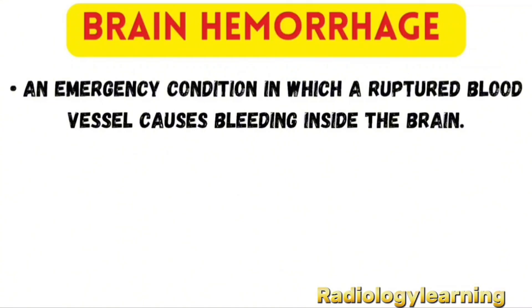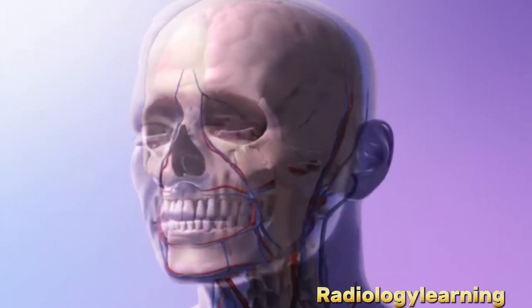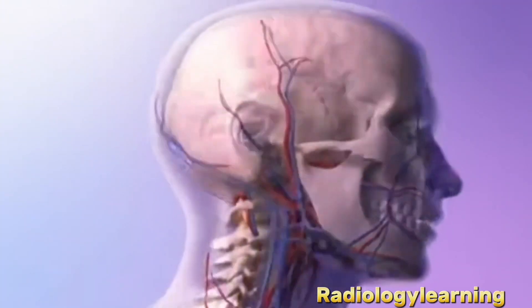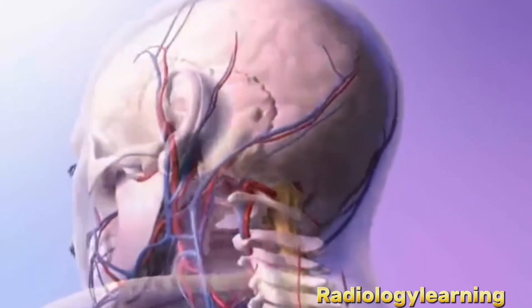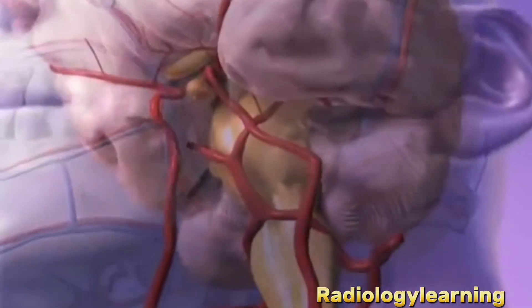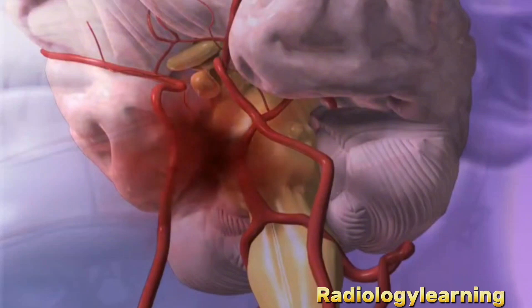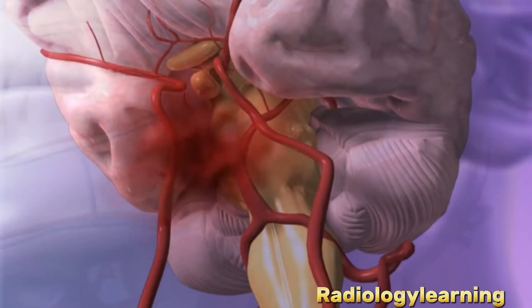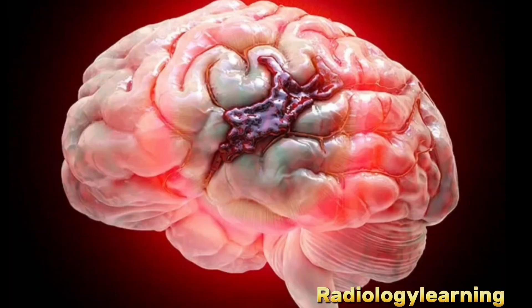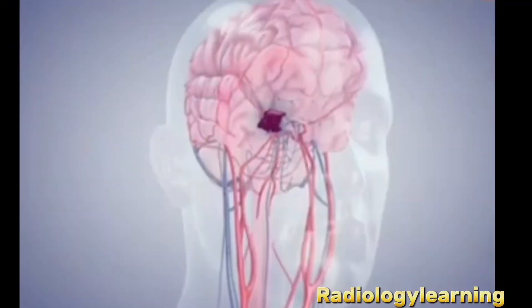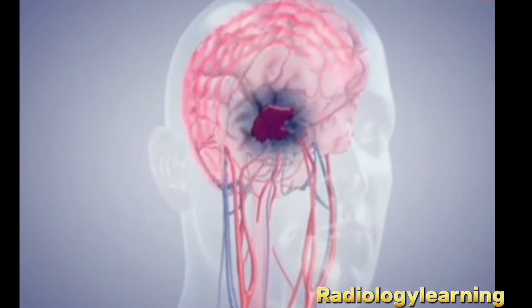Brain hemorrhage is an emergency condition in which a ruptured blood vessel causes bleeding inside the brain. When this happens, blood escapes into the brain tissue or surrounding areas where it shouldn't be. This bleeding increases pressure inside the closed skull, which is dangerous. As pressure builds up, it reduces blood flow to healthy brain areas, meaning less oxygen reaches the brain cells. Brain cells are extremely sensitive — even a few minutes without oxygen can lead to irreversible cell death.